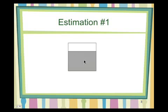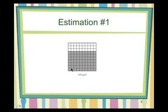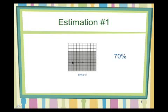So that would be 30 that's not shaded, which would make this 70% that is shaded. If I take a look at this, there's a 10 by 7 grid right here, and that's 70. Sure enough, my estimation seems to be pretty darn reasonable.